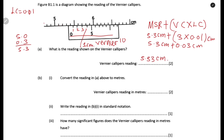So we have 5.3 centimeters plus 0.03 centimeters, and adding these gives us 5.33 centimeters as the reading for the Vernier calipers.